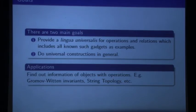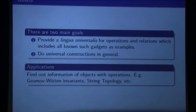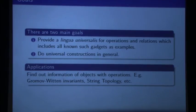So what is the goal of Feynman categories? They're supposed to give you a lingua universalis for operations and relations, which includes all such known gadgets as examples. I'll show you what kind of gadgets I mean by that and how this should work by going through the examples. One of the good things is that you can do algebraic constructions, universal constructions — so usually examples are like operads, properads, this, that, and the other. You can do these things once and for all and you're done.